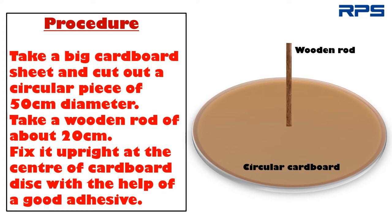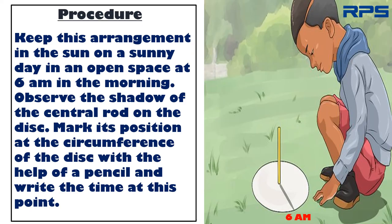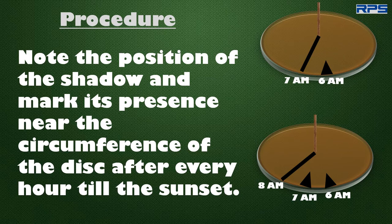Take a big cardboard sheet and cut out a circular piece of 50 centimeter diameter. Take a wooden rod of about 20 centimeters. Fix it upright at the center of the cardboard disk with the help of a good adhesive as shown in the figure. Keep this arrangement in the sun on a sunny day in an open space at 6 a.m. in the morning. Observe the shadow of the central rod on the disk. Mark its position at the circumference of the disk with a pencil and write the time at this point. Note the position of the shadow and mark its presence near the circumference of the disk after every hour till sunset.